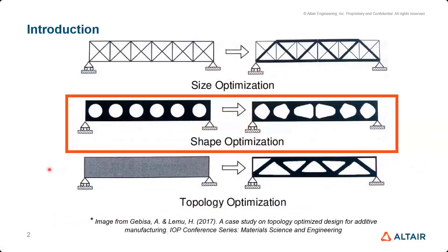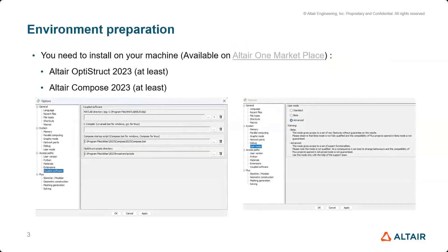Size optimization is the general optimization done by changing geometric parameters. Shape optimization, on the other hand, is where you optimize the boundaries of a shape to meet your objectives and the constraints you define. This functionality is already included in Flux.